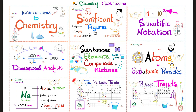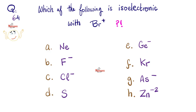Please watch the videos in this chemistry quick review playlist in order. First, let me answer the question from the previous video: which of the following is isoelectronic with Br+? Isoelectronic — iso means the same, so we need the same number of electrons as Br+. Bromine is element number 35, so neutral bromine has 35 electrons. Bromine +1 means it lost one electron, so now it has 34 electrons.